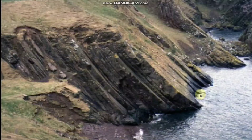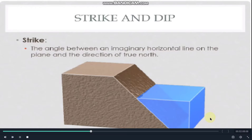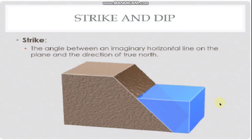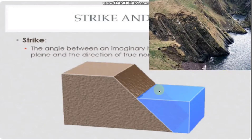Geologists use the term strike and dip to describe how much bending and tilting has occurred. Strike is the angle between an imaginary horizontal line on the plane and the direction of the true north. So let's imagine that this part here of my little block is the top of those rock layers. Where that surface touches the top of the rock layers, we figure out what direction it's pointing. Let's assume that it's north-east — and that is the strike of the rock.